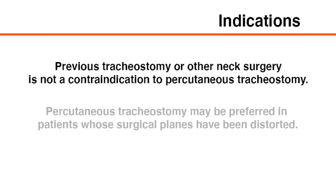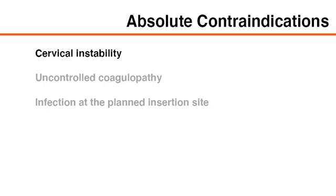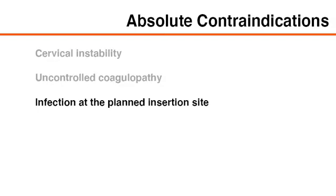Previous tracheostomy or other neck surgery is not a contraindication. In fact, percutaneous tracheostomy may be preferred in patients whose surgical planes have been distorted. Absolute contraindications to percutaneous tracheostomy include cervical instability, uncontrolled coagulopathy, and infection at the planned insertion site.